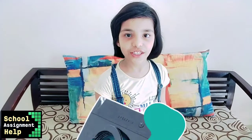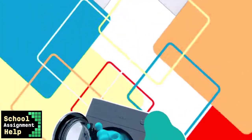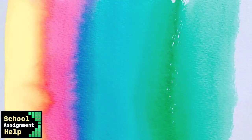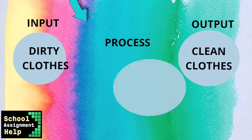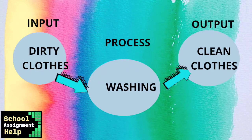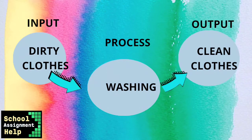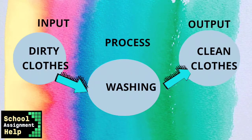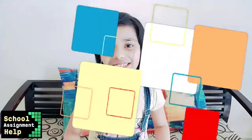I will tell you another example. I have dirty clothes — I put them in the washing machine and switch on the washing button. This is the processing, and the output is my clean clothes. These are examples of the IP cycle. Thank you for watching this video.